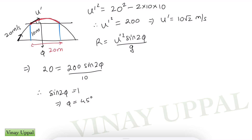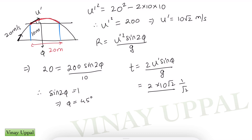So the time of flight for the sub-projectile (between the walls) is 2u'·sinφ/g = 2·10√2·(1/√2)/10 = 2 seconds. I hope you understood both the long method and the short method to solve this question.